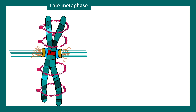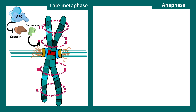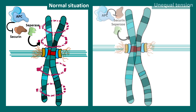At late metaphase and the beginning of anaphase, the chromosomes need to be separated. But these chromosomes are bound tightly with structural maintenance of chromatin proteins — the condensins and the cohesins. APCs, or anaphase promoting complexes, can inhibit securin and release separases, which can break down these condensin or cohesin rings, and thereby allow chromosome separation during anaphase.